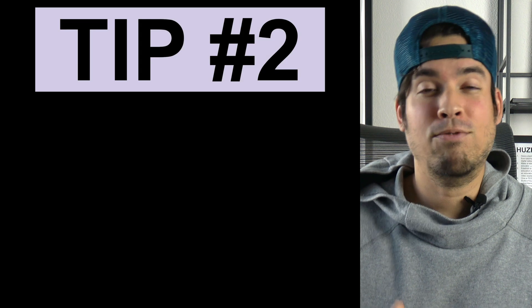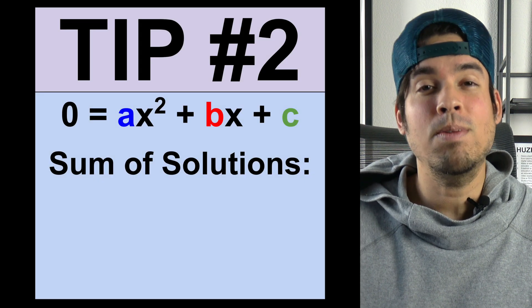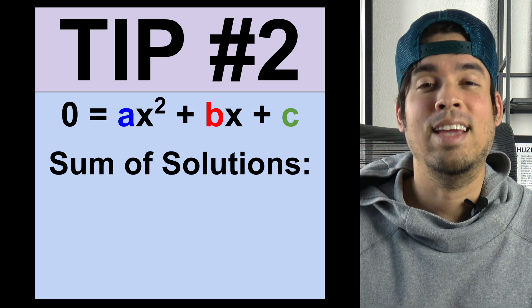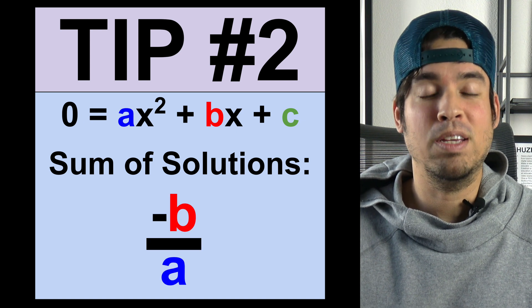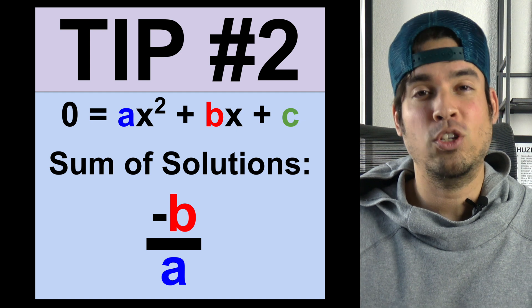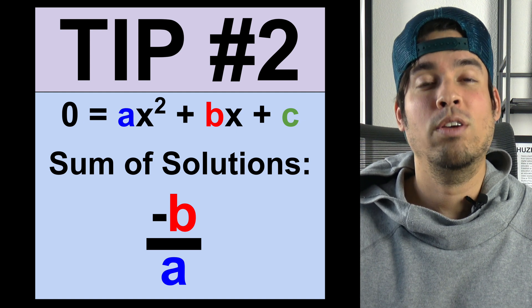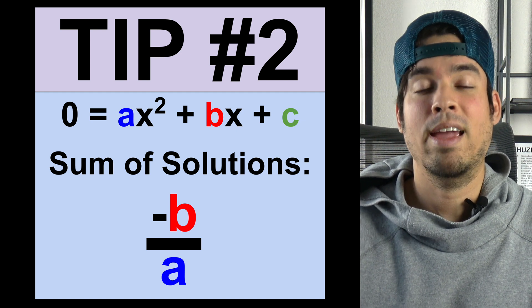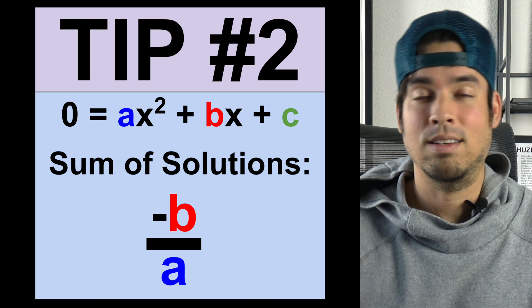Tip number two is that for any question that asks for the sum of the solutions of a quadratic equation, the answer is simply negative b over a. This will save you a lot of time, especially when something is not factorable. All you have to do is use negative b over a and you've got your sum of the solutions — one and done.